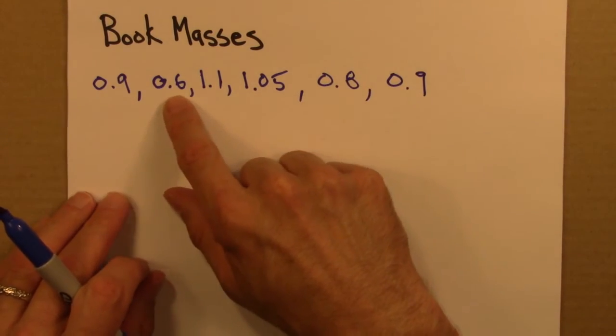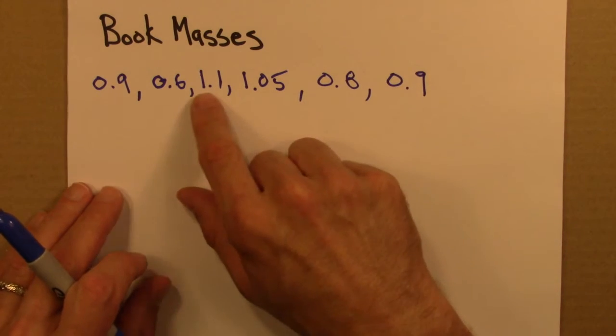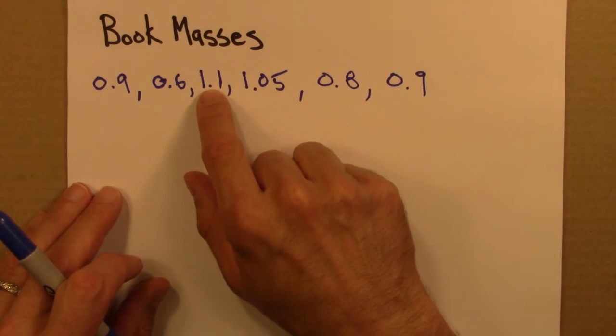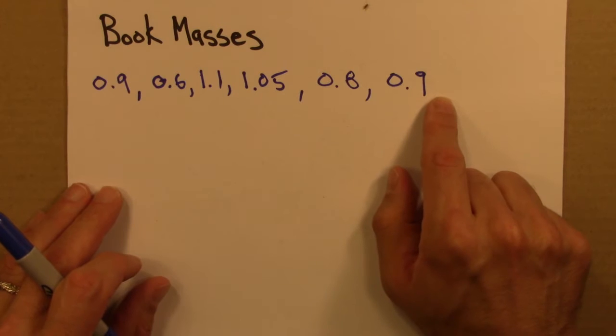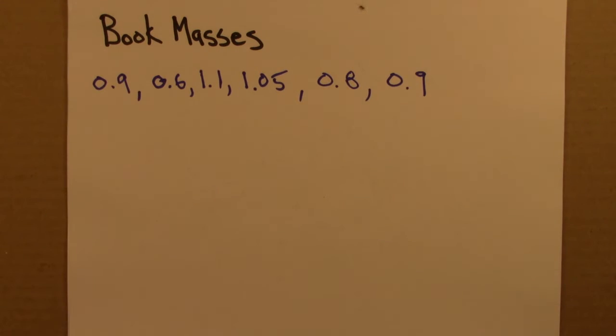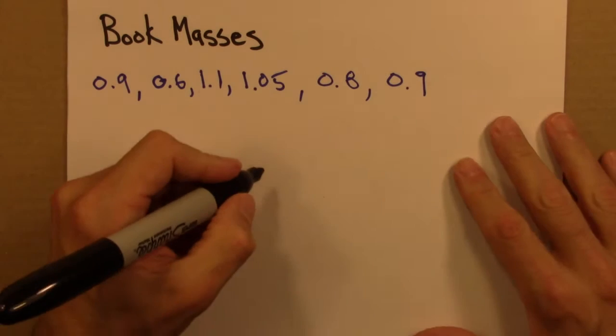So the idea here is, let's just pretend, because I really didn't feel like weighing all of my books, that I were to do this. 1, 2, 3, 4, 5, 6, I weighed 6 books. And I could then present this data in a histogram. And so just a quick reminder how that would go.